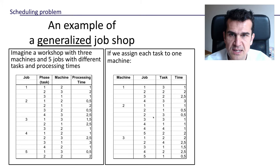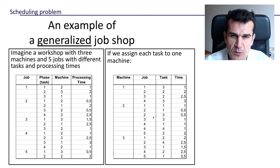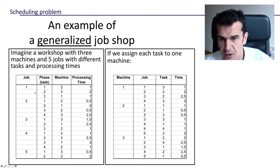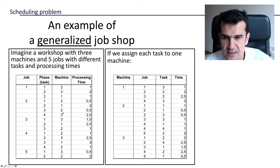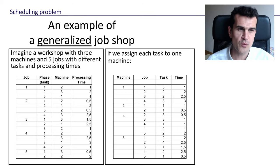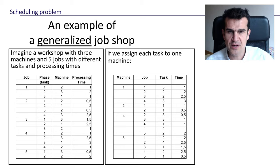This would be an example of a generalized job shop. Why generalized? Because in this example, there are some jobs, like job two, that have to go to machine two twice. That is why it's a generalized version of the job shop problem that we've been talking about. This is an example that we're going to work on in some other videos. So with this we'll finish this video, and I very much look forward to seeing you in the next one. See you later. Cheers.